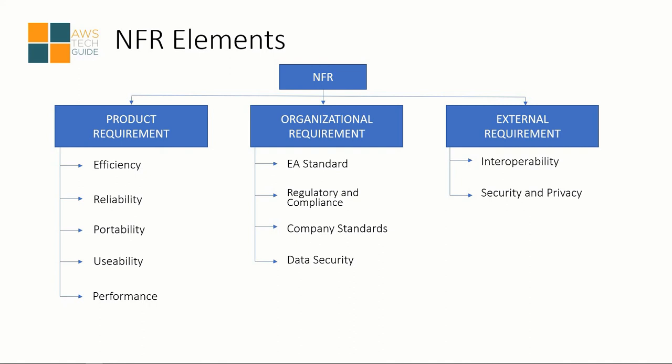If your application or the system you are developing or modifying is external facing, there are additional properties to consider. When your application or software is connecting to third parties or any other system, you need to check interfaces, interoperability, security, data security, and privacy. These are the basic elements consolidated here, but as per your organizational needs, you can have hundreds of elements in your NFR documentation. These are the best elements to start with.